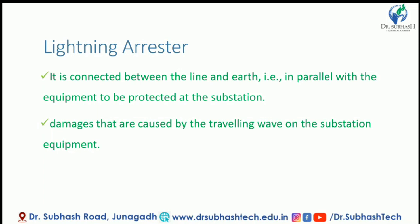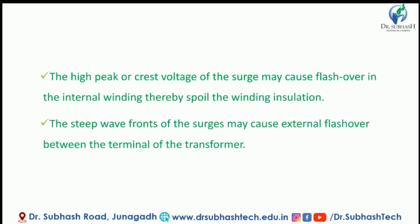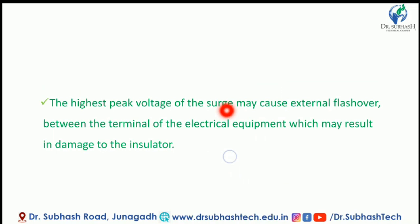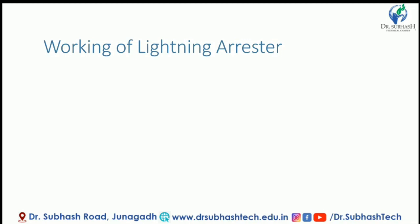Damages that are caused by travelling waves on the substation equipment: The high peak or crash voltage of the surge may cause flashover in the internal winding, thereby spoiling the winding insulation. The highest peak of the voltage surge may also cause external flashover. So this is the Lightning Arrestor's definition and the damages it prevents.